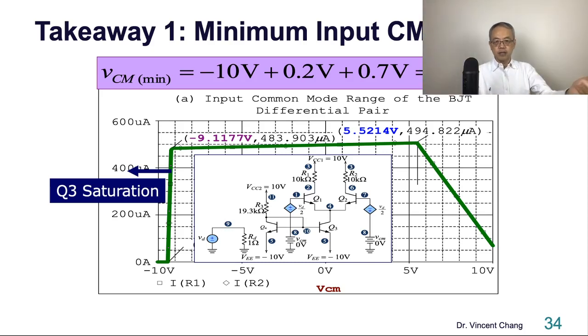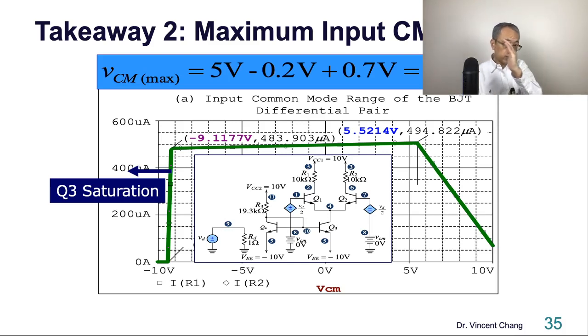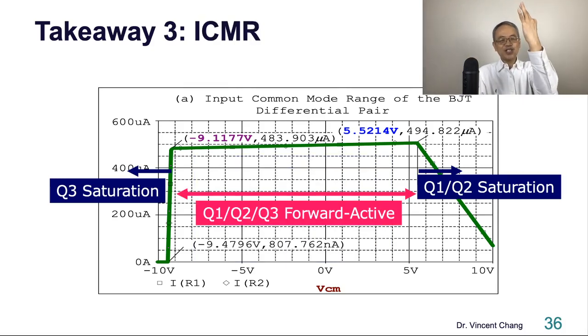By the same token on the other side, 5.5, you see 5.5, 5.5214. So when you go beyond 5.5, the current drop reflects the differential pair, the driver falling into saturation. So only within this range, the three brothers, the three transistors, will qualify as an amplifier and the current mirror, all stay where they are supposed to stay, the forward active region. So there is a range called Input Common Mode Range.